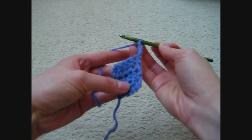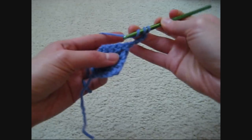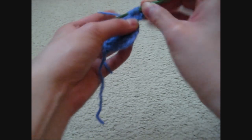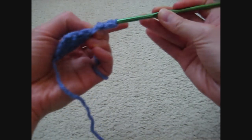Then I turn my work and yarn over twice before I go through the stitch. It looks like that, and then I pull the yarn through 2 at a time just like the other one.